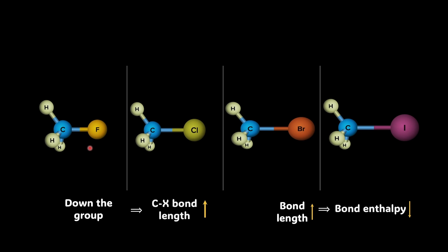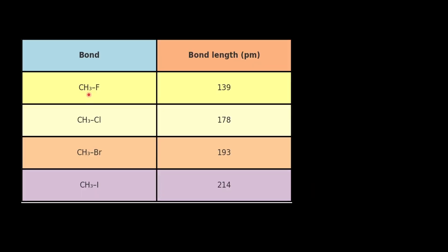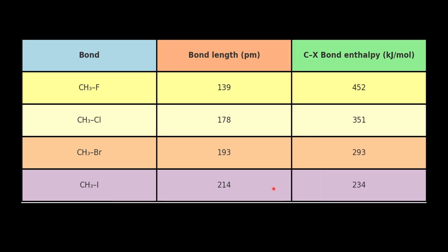Here is the data to validate it. You can see that the carbon-fluorine bond has the least bond length, while the carbon-iodine bond has the maximum bond length. As we go down the group, the bond length is increasing. Check the bond enthalpy: the amount of energy required to break the bond is maximum for carbon-fluorine and minimum for carbon-iodine. Now that we have looked at how long the bond is and how strong the bond is, it is time to understand the internal tug-of-war for electrons between the atoms involved.